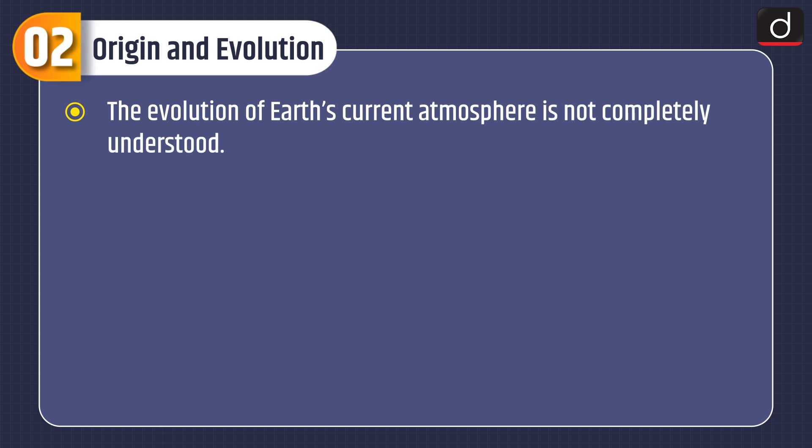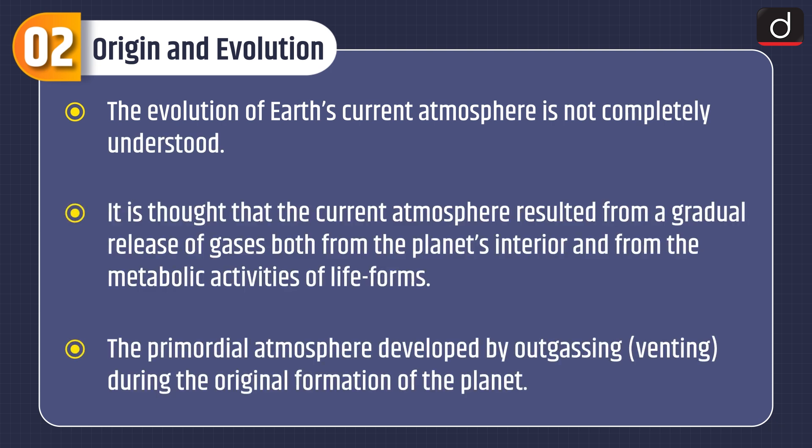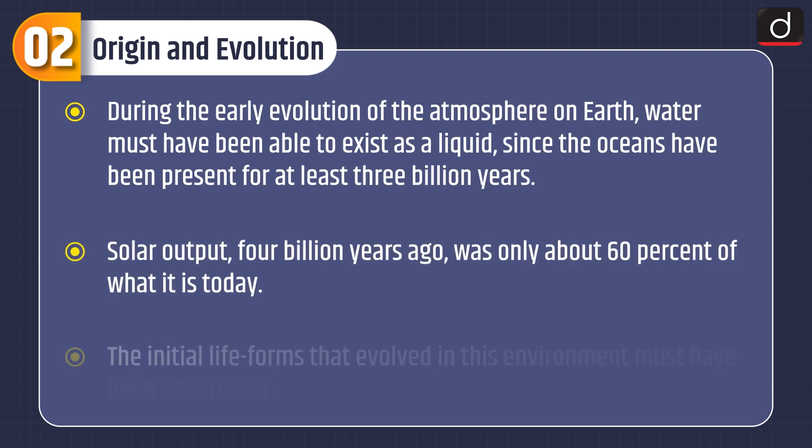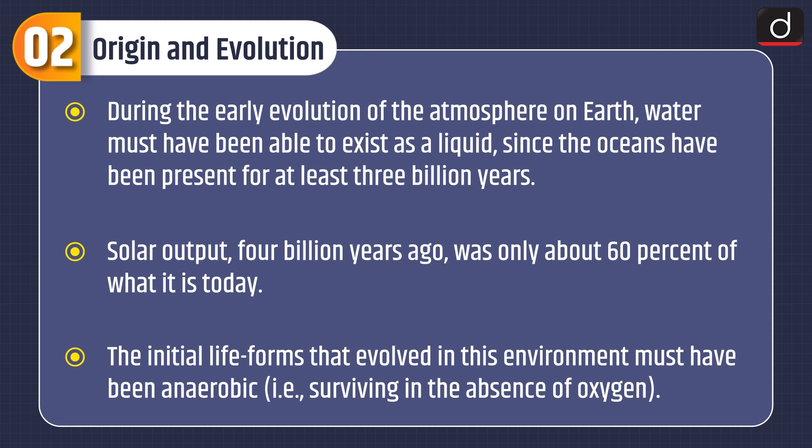Now moving on to its origin and evolution. The evolution of earth's current atmosphere is not completely understood. It is thought that the current atmosphere resulted from a gradual release of gases both from the planet's interior and from the metabolic activities of life forms. The primordial atmosphere developed by outgassing, that is venting, during the original formation of the planet. Water must have been able to exist as a liquid since the oceans have been present for at least 3 billion years. Solar output 4 billion years ago was only about 60% of what it is today. The initial life forms that evolved in this environment must have been anaerobic, that is surviving in the absence of oxygen.